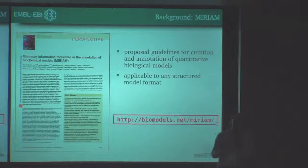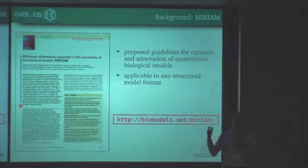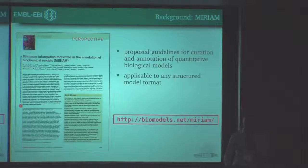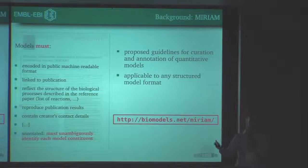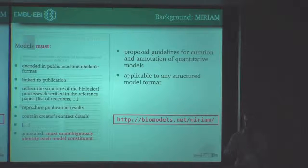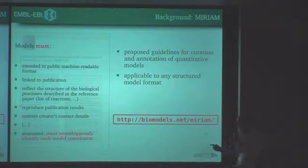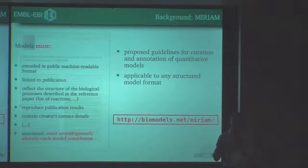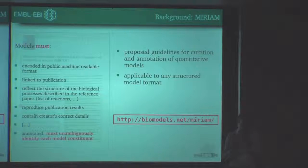Initially, it's a set of guidelines, part of this minimal information thing. It's about curation and annotation of quantitative biological models, and that's where the name MIRIAM comes from. One key point is that all model elements must be annotated — and by annotated, we mean identified. From that point on, I will stop talking about models and just talk about identifiers that can be used for any kind of data.